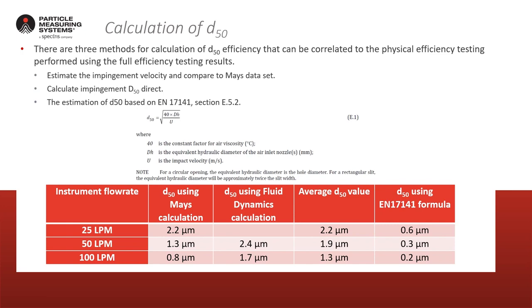For calculating the D50, there are three methods. The first is estimating the impingement velocity and comparing to a chart that Mays developed — available in the technical white paper. The second is actually calculating the fluid dynamics to determine what size would impact at a given inlet velocity. The third is that EN 17141 also gives its own approximation formula for calculating a D50, with the formula shown on screen.